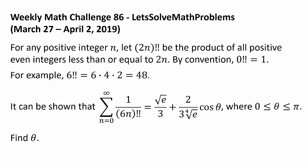It can be shown that the summation from n equals 0 to infinity of 1 over (6n)!! equals √e/3 plus 2 over 3∜e times cosine of theta, where theta is between 0 and π inclusive. Find theta.